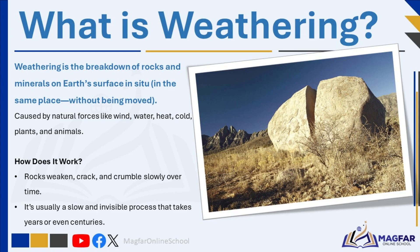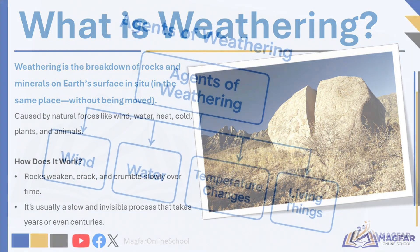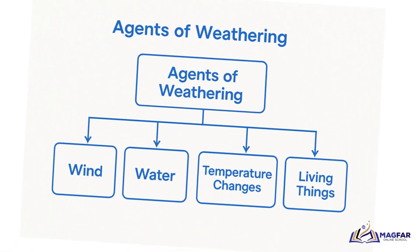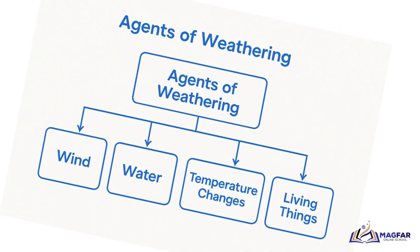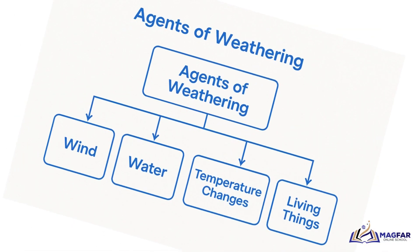Think of it like this: a large rock sits outside. Over time, wind, rain, temperature changes, and even living things like plants and animals cause the rock to weaken, crack, and eventually crumble into smaller pieces. This is what we mean by weathering — the gradual breakdown of rocks into smaller pieces when exposed to natural elements like wind, water, heat, and cold.